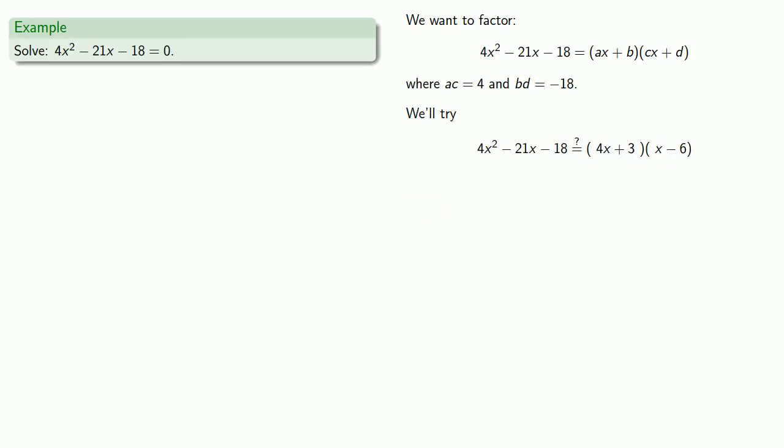(4x + 3)(x - 6)? Finally, we have a factorization. Let's see, what were we doing? Oh yeah, we wanted to factor this expression, so we have our factorization. Since we have a product equal to 0, we know that one of the factors must be 0. So either 4x + 3 = 0, or x - 6 = 0, and solving gives us our two solutions.